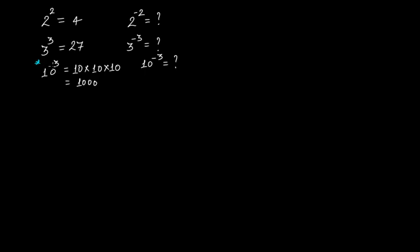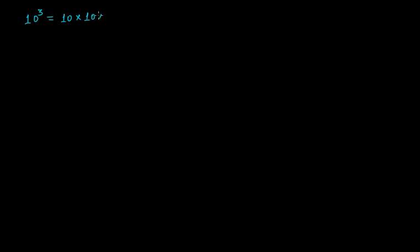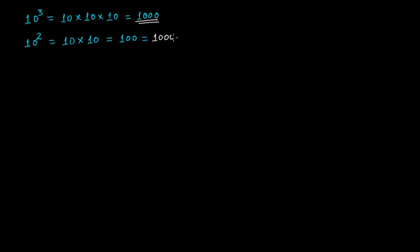Let's take the example of powers of 10 and use a pattern to calculate the value. So 10 raised to the power of 3 is equal to 10 multiplied by 10 multiplied by 10, which is 1000. Now 10 raised to the power of 2 is equal to 10 multiplied by 10, that is 100, and 100 is actually equal to 1000 divided by 10.